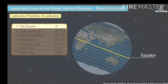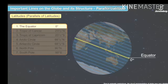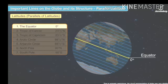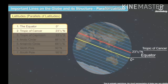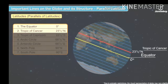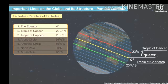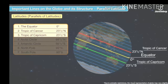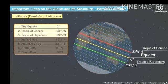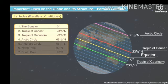The important parallels of latitude are: first, the Equator at zero degrees; next, the Tropic of Cancer at 23½ degrees North; and the Tropic of Capricorn at 23½ degrees South.